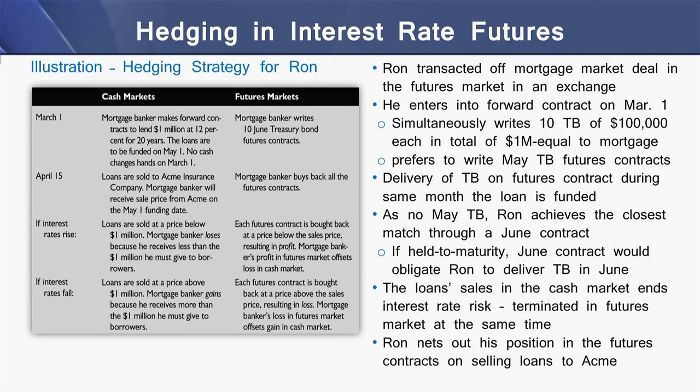If held to maturity, the June contract would obligate Ron to deliver Treasury Bonds in June. The loan sale in the cash market ends the interest rate risk that was established in the futures market at the same time. In this way, Ron nets out his position in the futures market while selling his mortgage loans to Aceman.